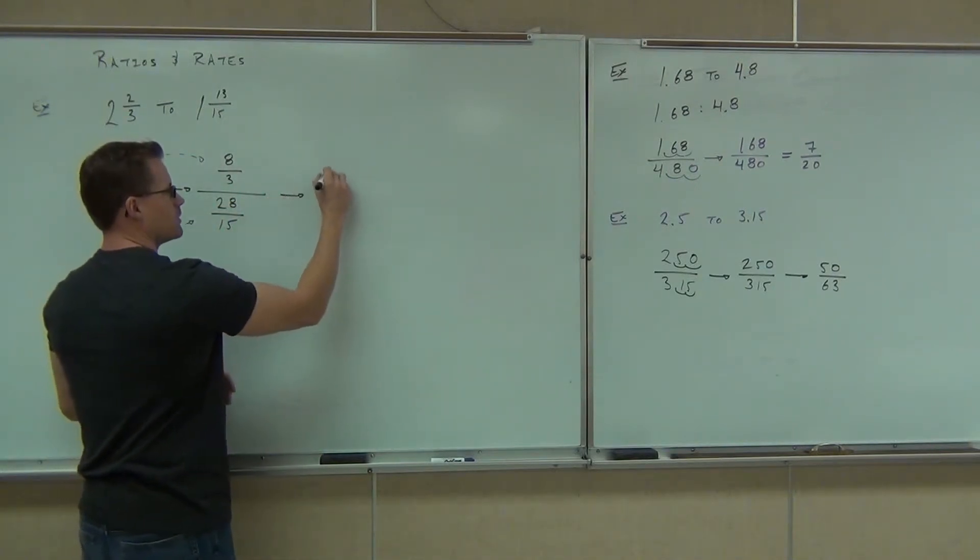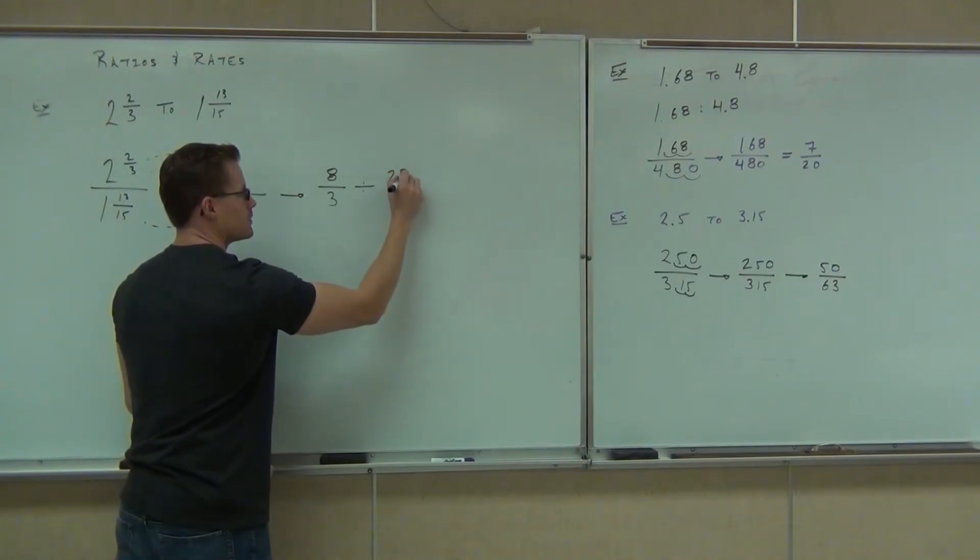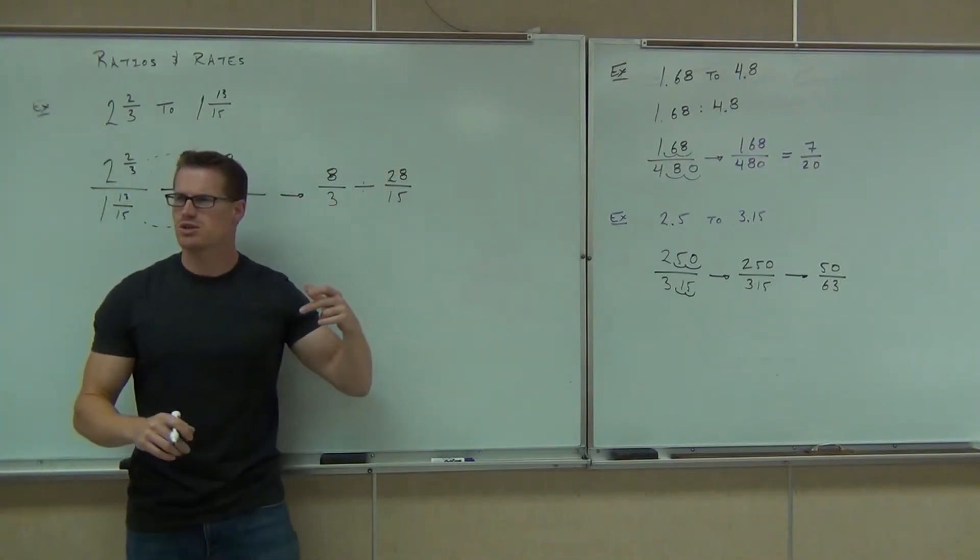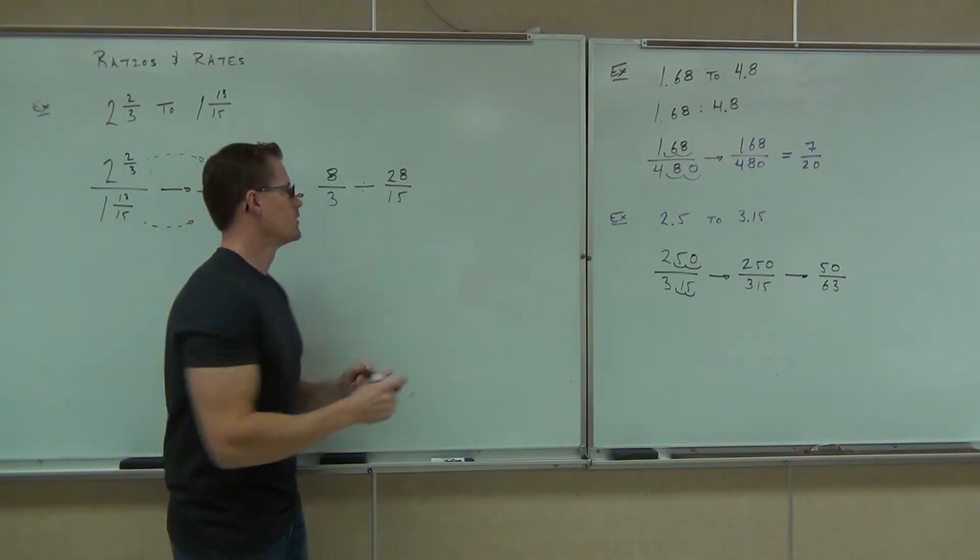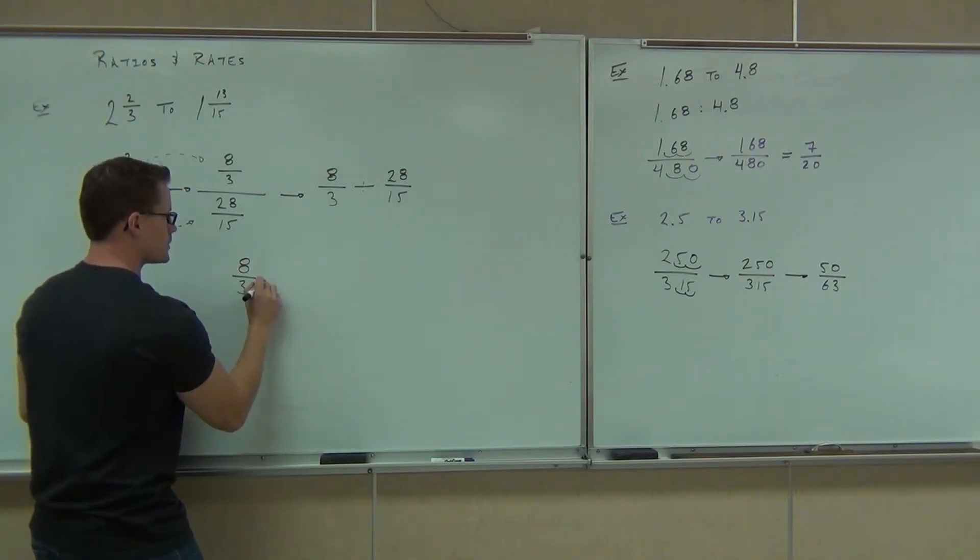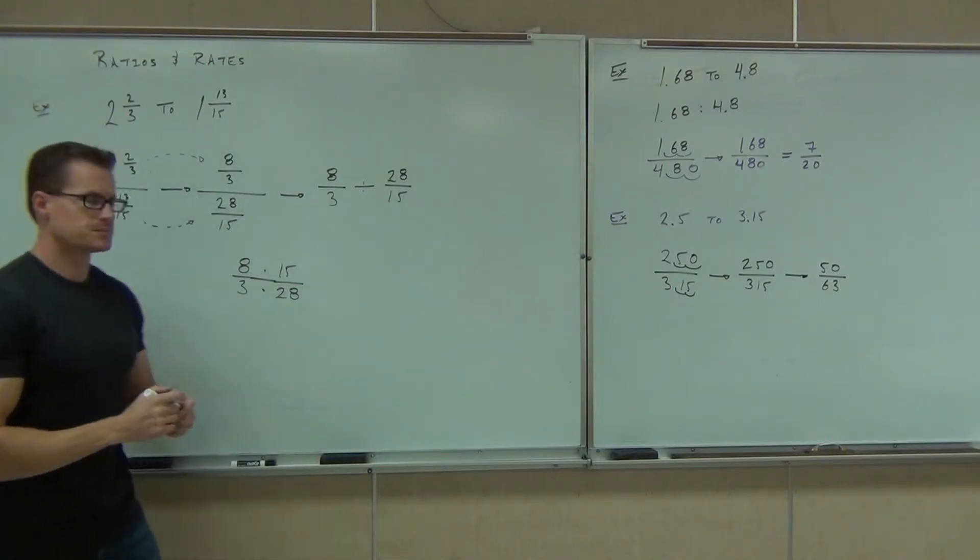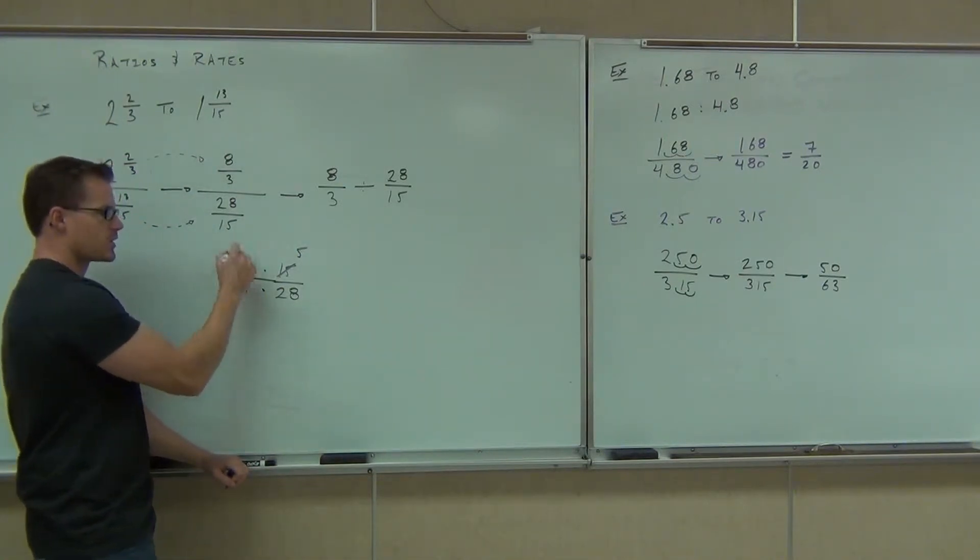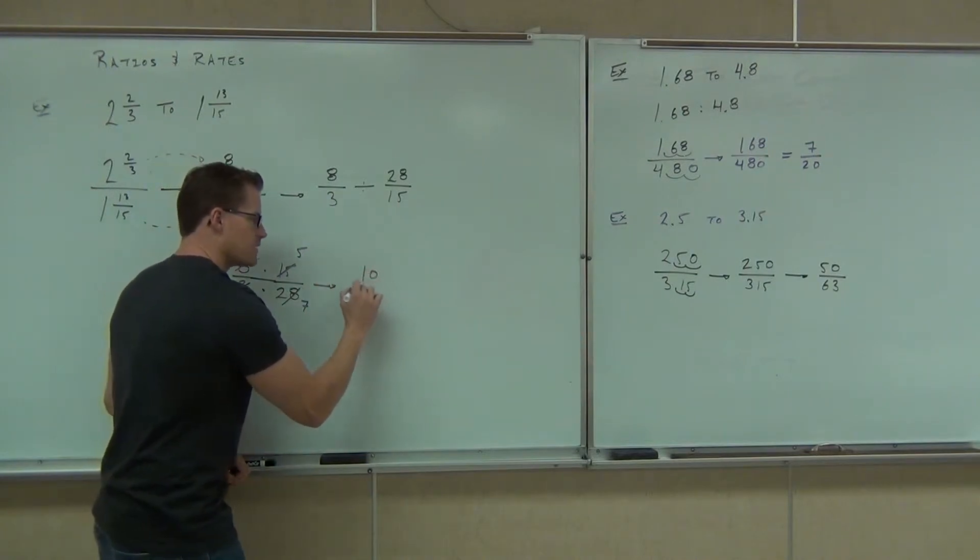My man. Yeah, the main fraction bar means we're dividing. So, eight thirds divided by 28 15ths. Oh, this should be coming back to you. You just had a test on this. What are you going to do here? You flip the second one. So, we're going to have eight thirds times 15 over 28. Of course, now we're multiplying, and we can simplify. Three goes into three one time into fifteen five times. What goes into both those? Four. Two times and? Seven. You get ten to seven.